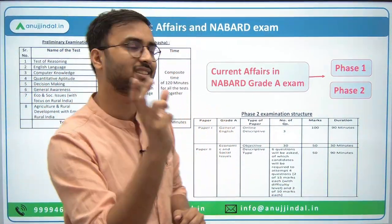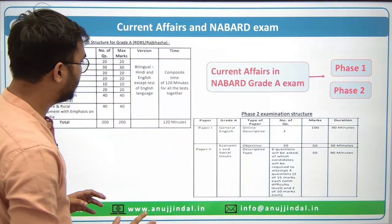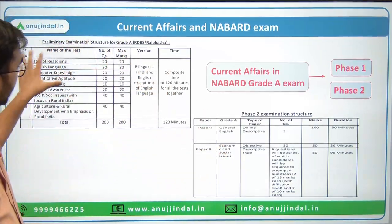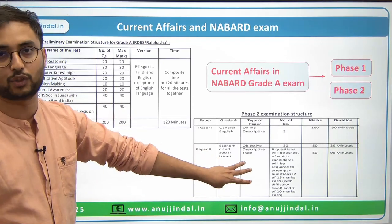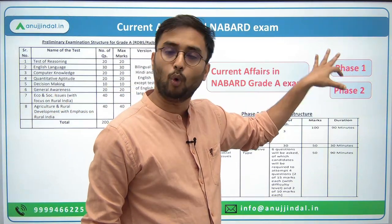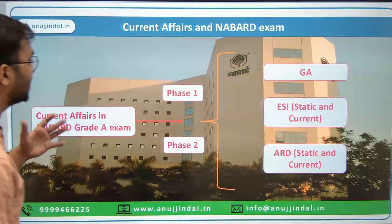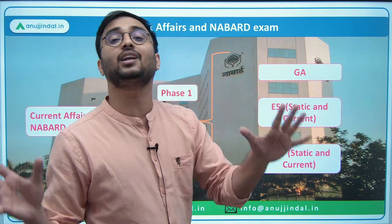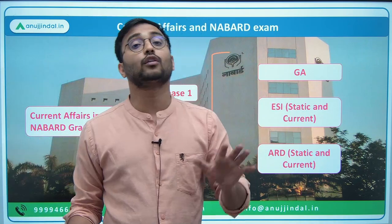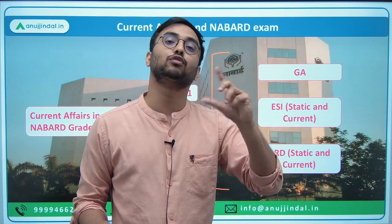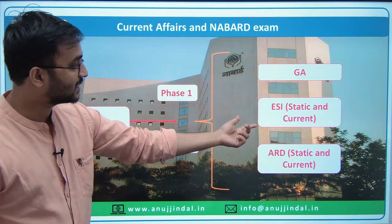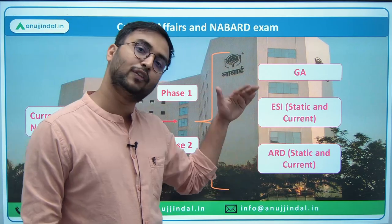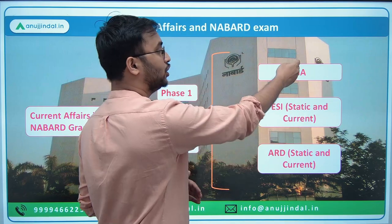NABARD exam has Phase 1 and Phase 2. Phase 1 has eight subjects and Phase 2 has two papers — English and ESI & ARD. Current affairs in NABARD comes in both Phase 1 and Phase 2 in three main subjects: first is General Awareness, which is totally current affairs; then ESI, which is asked in Phase 1 and Phase 2; and ARD — Agriculture and Rural Development — also asked in both phases. ESI and ARD have both static and current components.